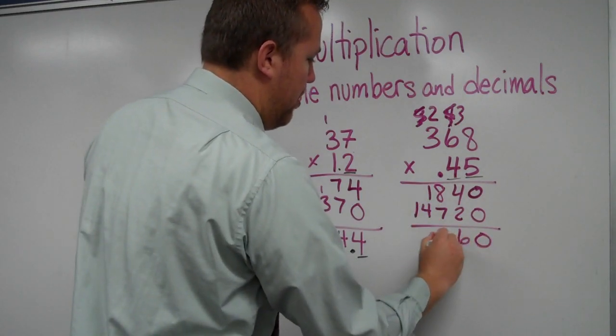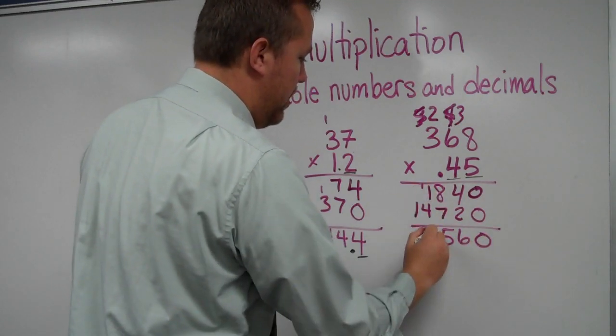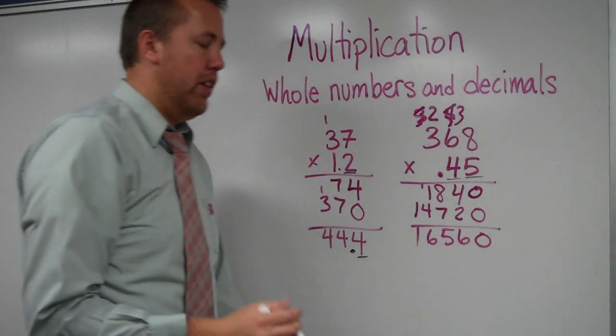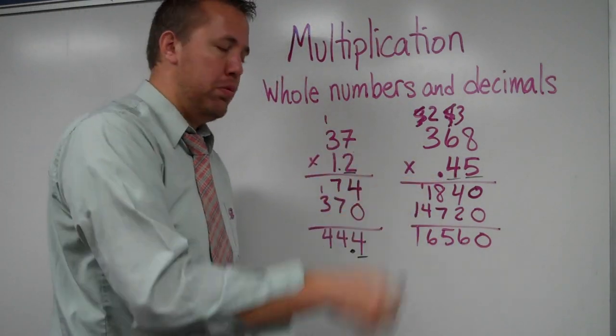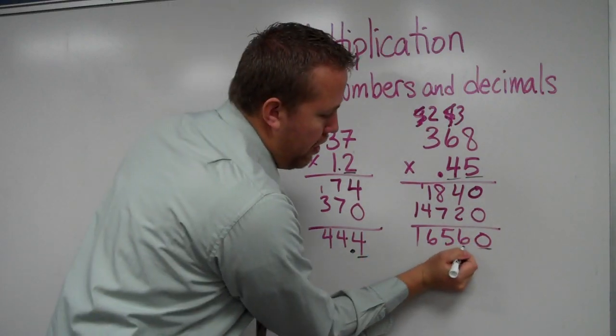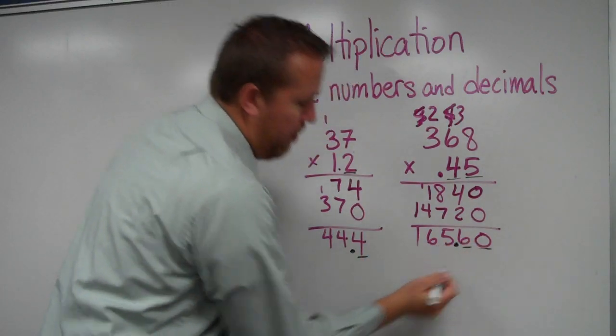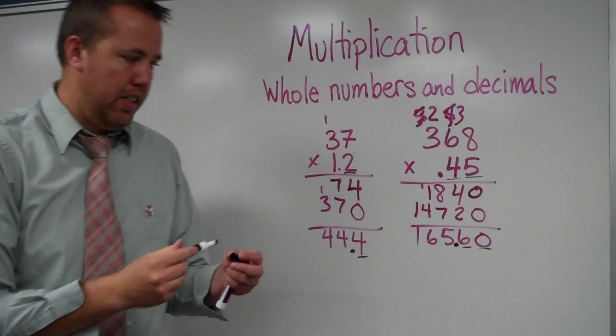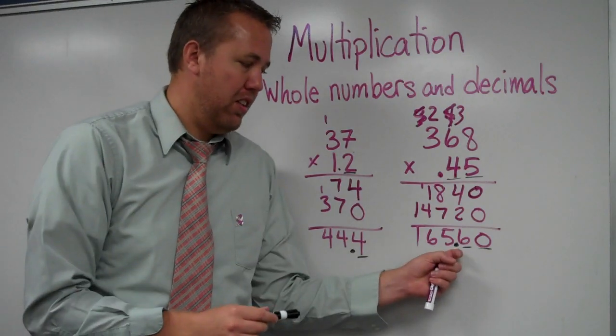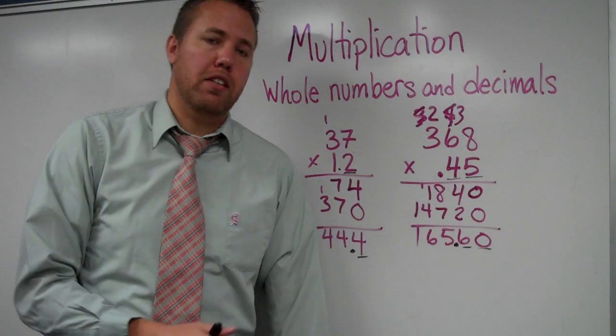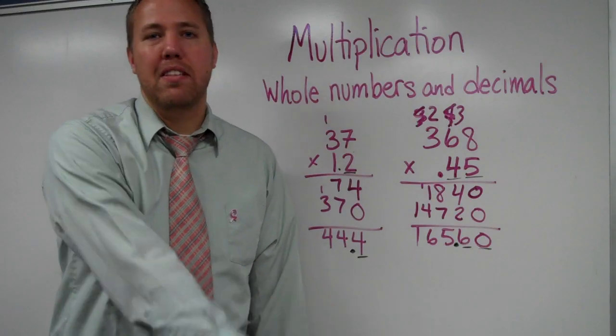Add them up. Fifteen, carry the one, six, and that. Now, because there are two digits behind the decimal in the problem, two digits behind the decimal in the answer, and voila. 368 times 45 equals 165 and 60 hundredths, or 165.60.